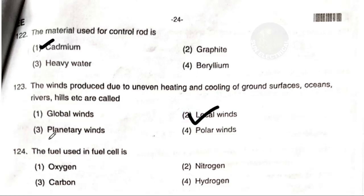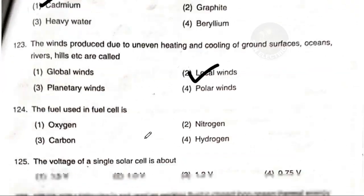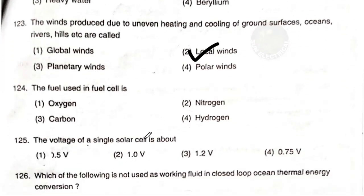The fuel used in a fuel cell is: option 1 oxygen, option 2 nitrogen, option 3 carbon, option 4 hydrogen. The answer is option 4 — hydrogen. Hydrogen is used as the fuel in a fuel cell.